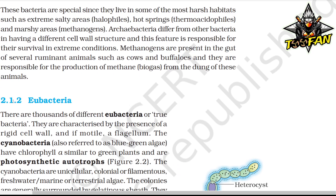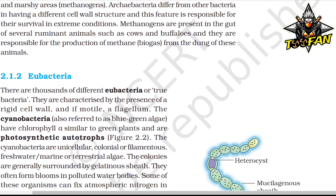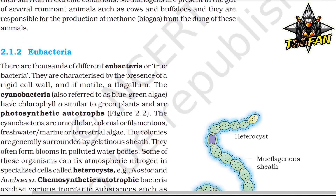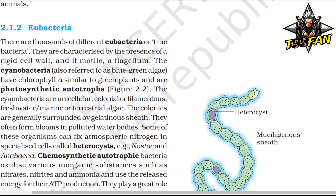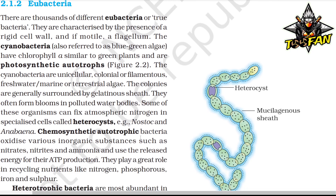Eubacteria, also known as true bacteria, are characterized by the presence of a rigid cell wall and, if motile, a flagellum. The cyanobacteria, also referred to as blue-green algae, have chlorophyll A similar to green plants and are photosynthetic autotrophs. They are unicellular, colonial, or filamentous freshwater, marine, or terrestrial algae. They often form blooms in polluted water bodies. Some can fix atmospheric nitrogen in specialized cells called heterocysts, e.g., Nostoc and Anabaena. Chemosynthetic autotrophic bacteria oxidize inorganic substrates such as nitrates, nitrites, and ammonia, using the released energy for ATP production, playing a great role in recycling nutrients like nitrogen, phosphorus, iron, and sulfur.